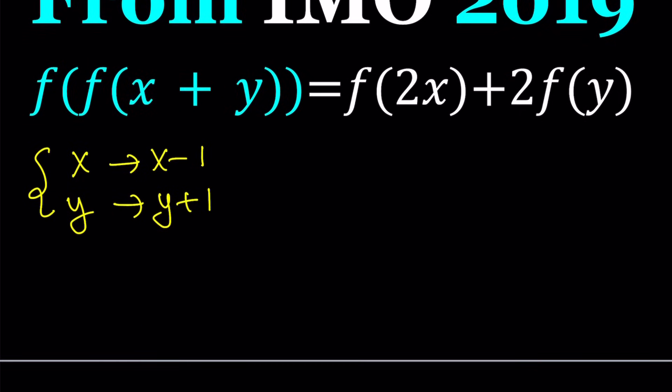Let's replace x with x-1 and y with y+1. When you do this, the sum of x-1 and y+1, because 1 is going to cancel out, is still x+y. So we get the same thing on the left-hand side.